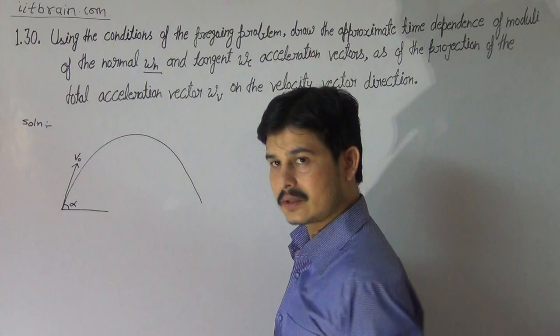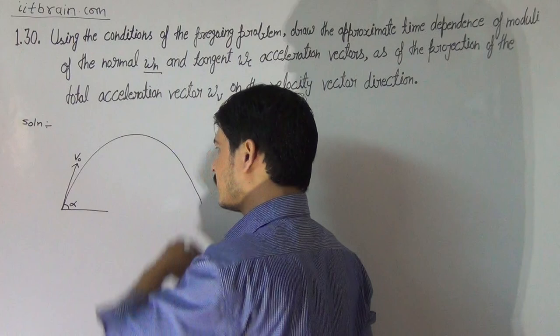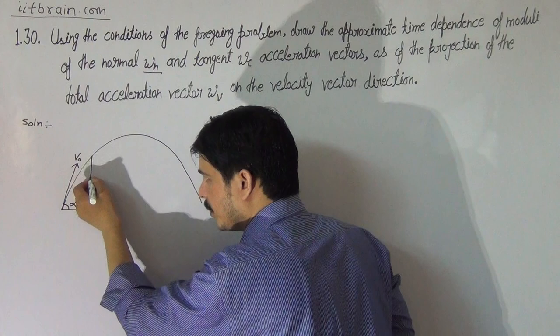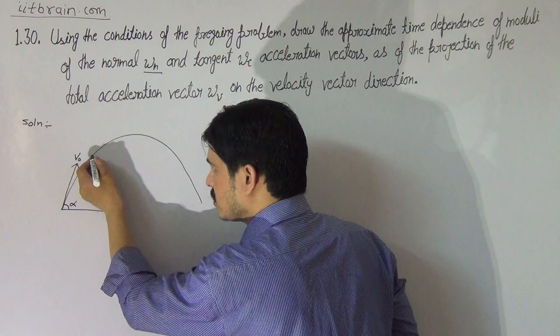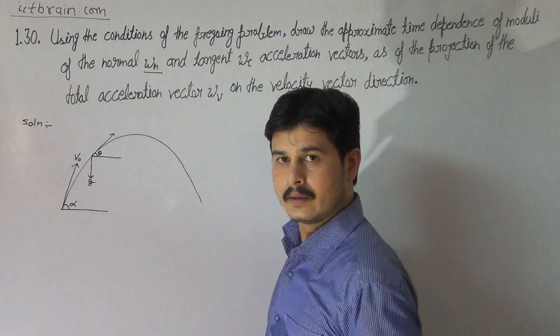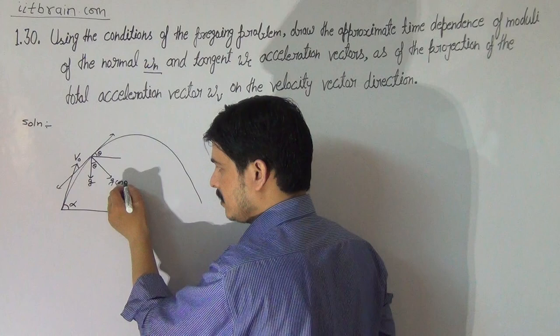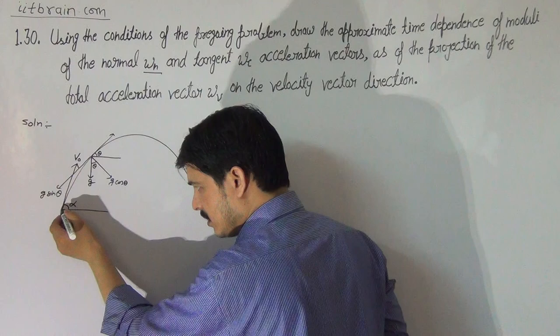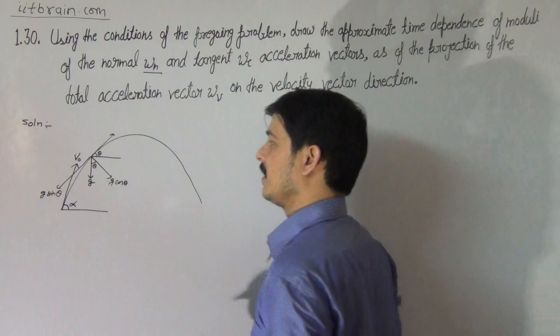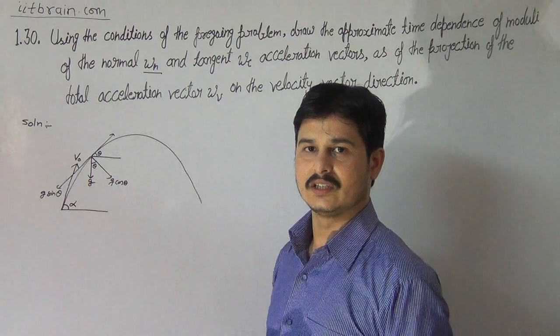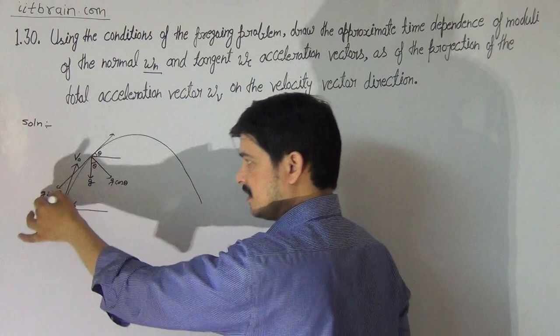First, we need to plot normal acceleration against time. The component of gravity perpendicular to velocity gives the normal acceleration, and the component parallel to velocity gives the tangential acceleration. At any point, if the velocity makes angle theta with horizontal, the component will be g·cos(theta) along the normal and g·sin(theta) along the tangent.